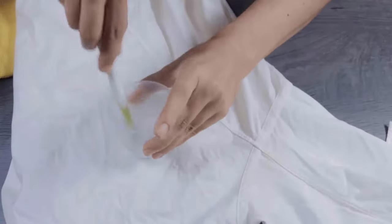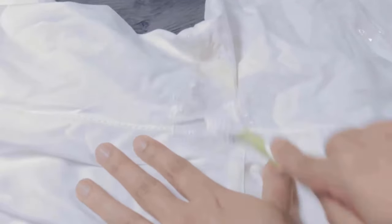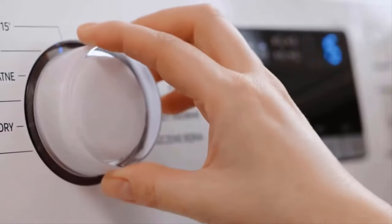Then grab a toothbrush and gently scrub the paste over the stained area. Put your cloth in a rinse cycle, and you will get a neat, stain-free cloth easily.